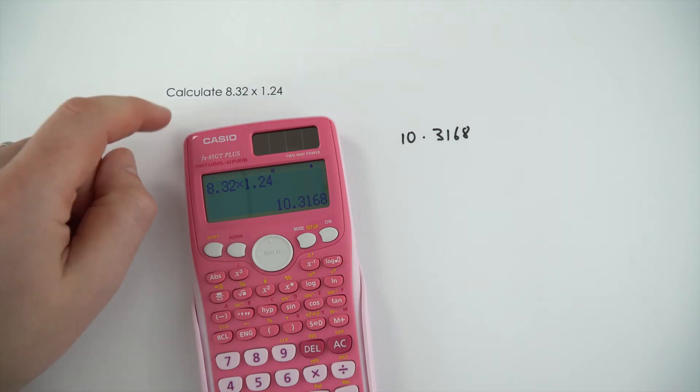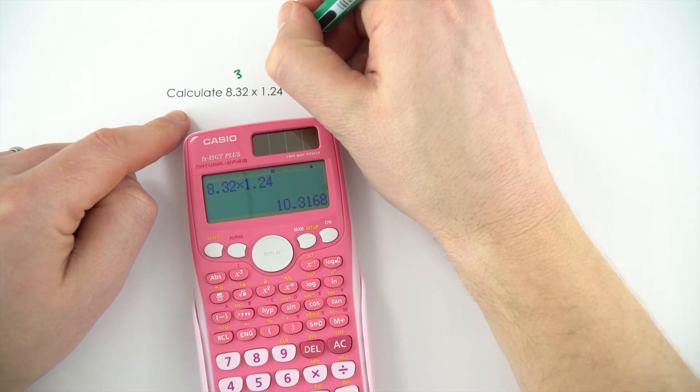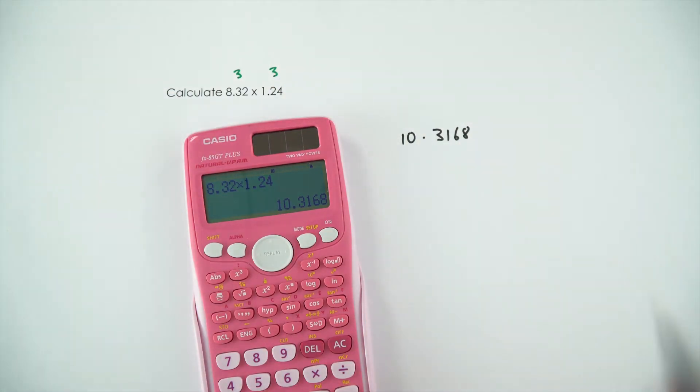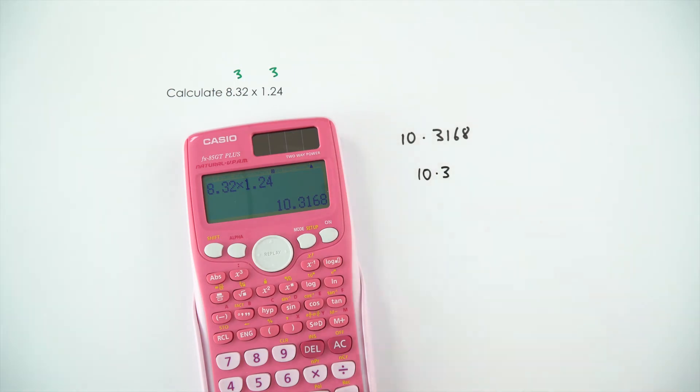So, coming back to the question we had at the start of the video, because 8.32 is to three significant figures, and also 1.24 is also to three significant figures, then that means our final answer should also be given to three significant figures. So, a more appropriate answer to this question would be 10.3.